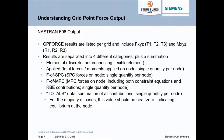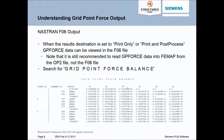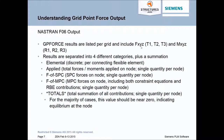The results are listed per grid. In the F06 output, you have T1, T2, and T3, corresponding to force in X, Y, and Z. Moments in X, Y, and Z correspond to R1, R2, and R3. Results are separated into four categories plus a summation: elemental (per connecting flexible element), applied (total forces and moments on a node), SBC and MPC forces (including constraint equations and RBE contributions), and totals — the total summation, which should come up to near zero, indicating equilibrium at the node.